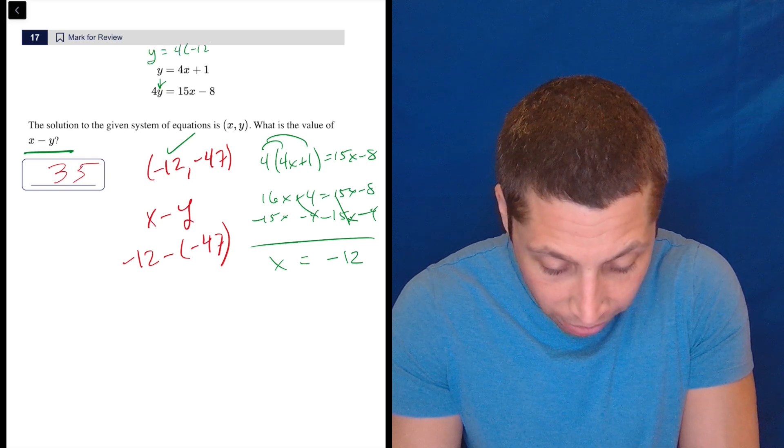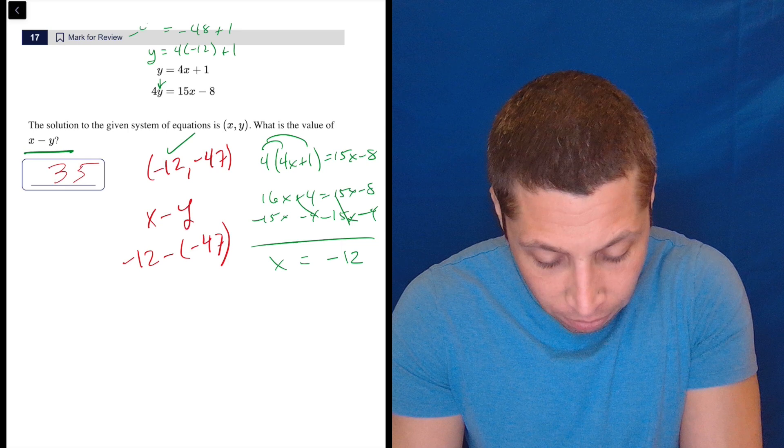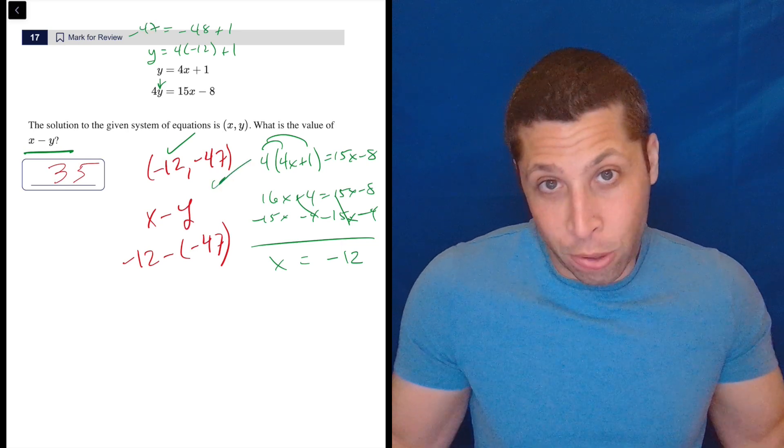And then I have to come back to here. So Y is equal to 4 times negative 12 plus 1. That's negative 48 plus 1. That is negative 47, check.